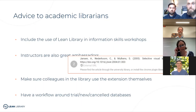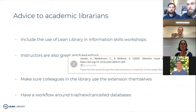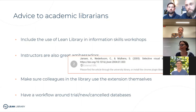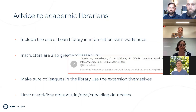We also need a workflow around our databases — so when a new database is bought, when we get a trial, when a database is canceled, Jos and I need to know. Maybe we should have someone from the licensing department in our team because they're even closer to that process. Also, we use the Lean Library logo in our LibGuides — in our alphabetical list and in our Guides per Discipline. The logo tells people this database is accessible from home. We use it so people see it every time they visit our database list or a LibGuide, and hopefully that helps them get familiar.